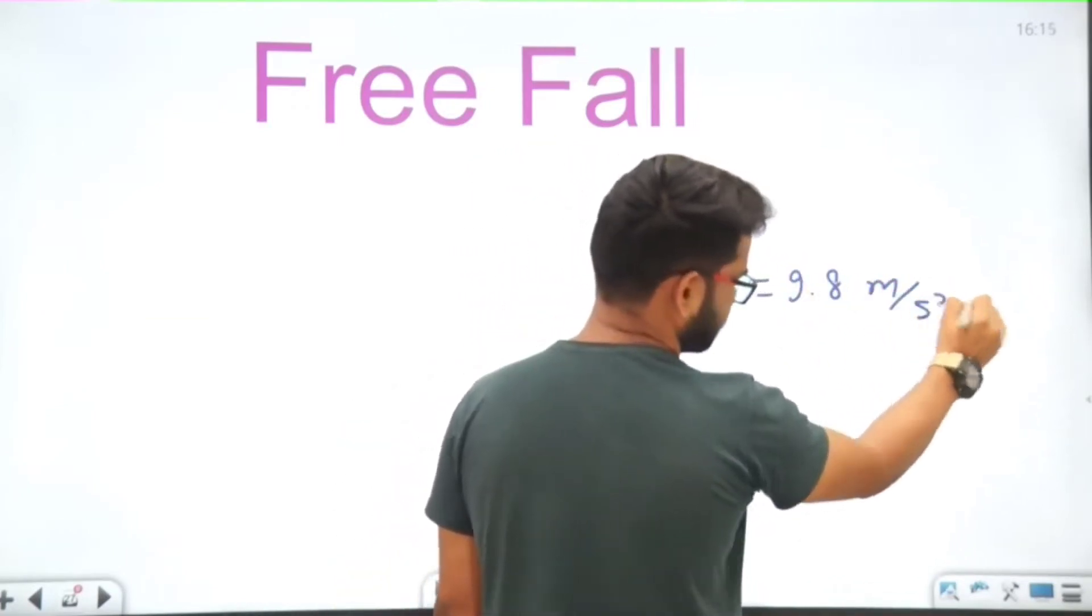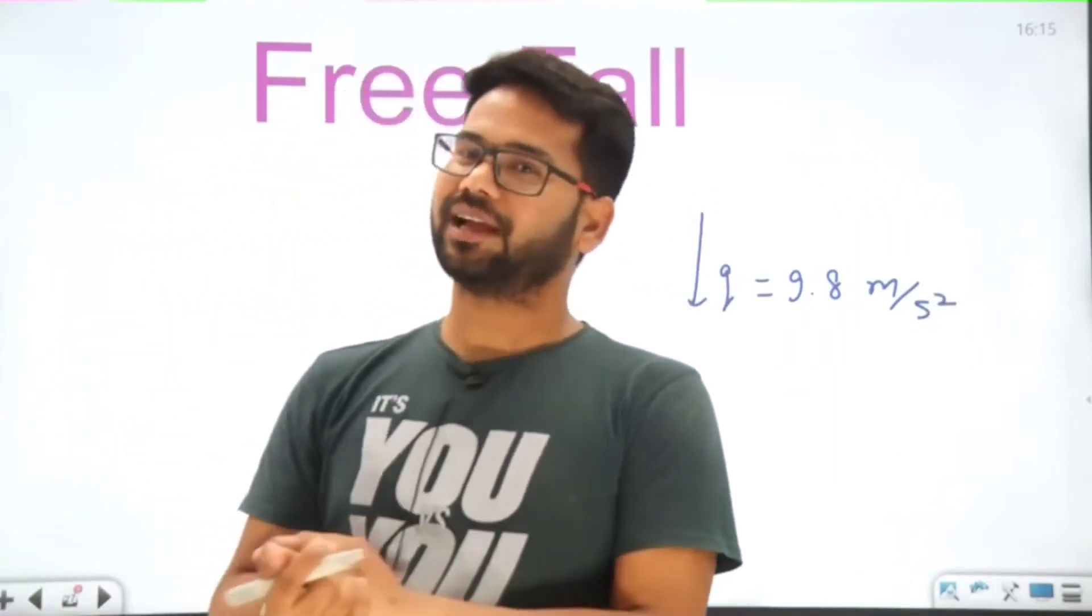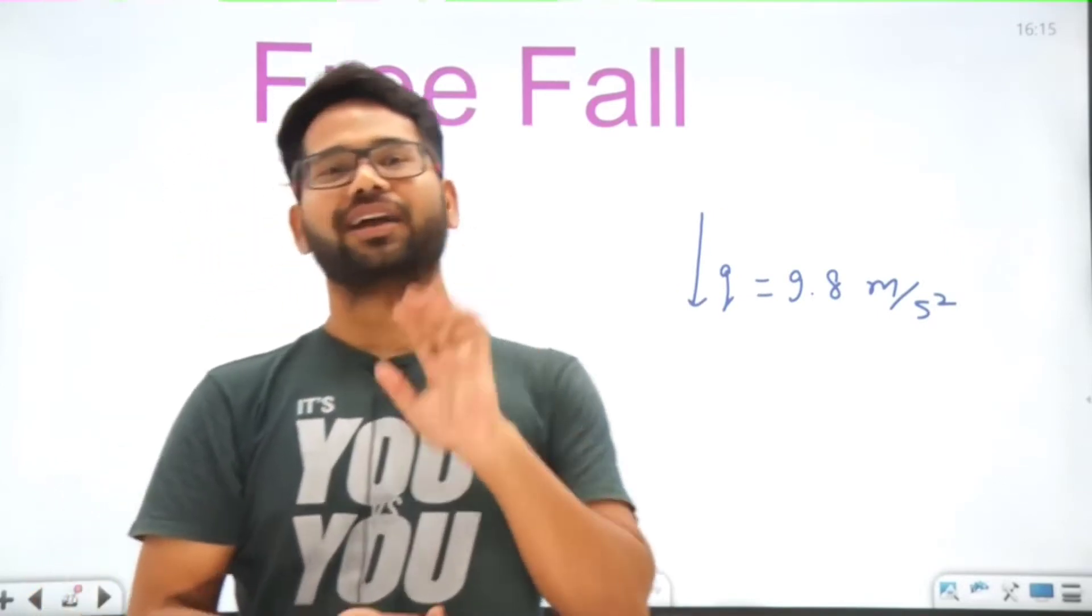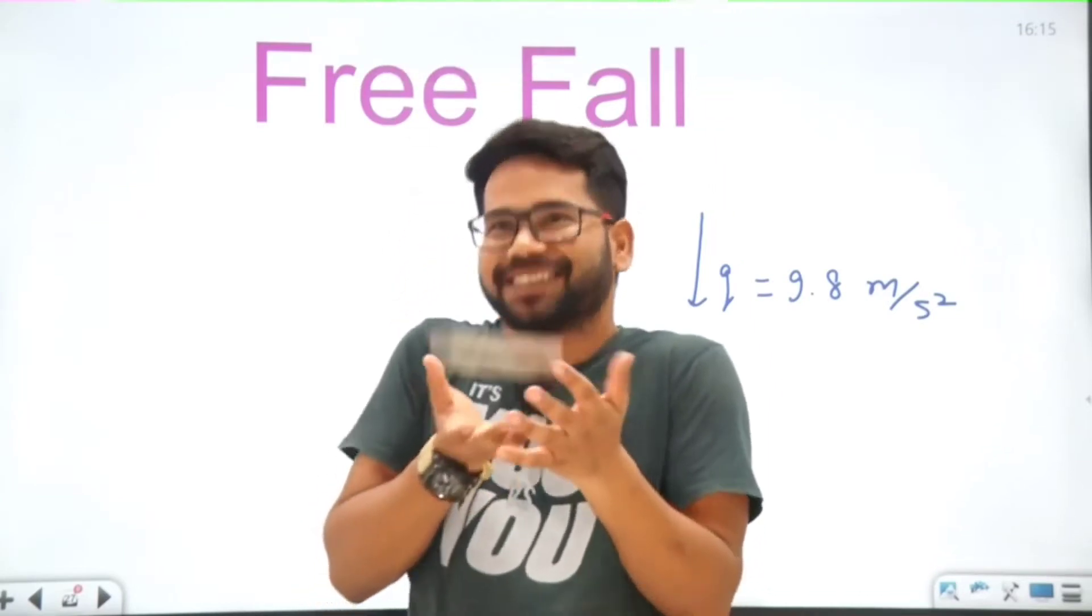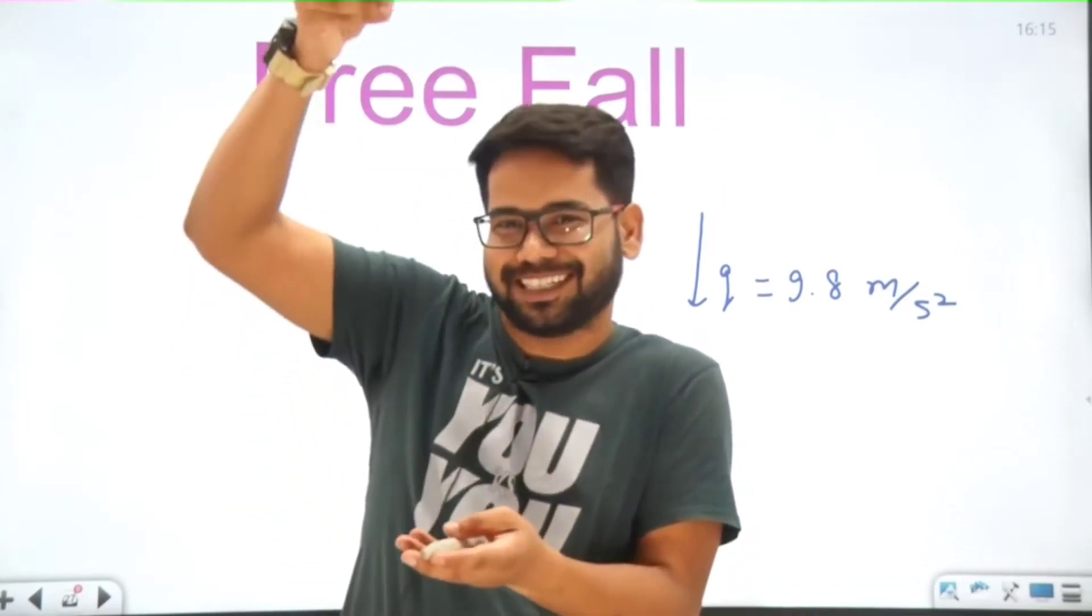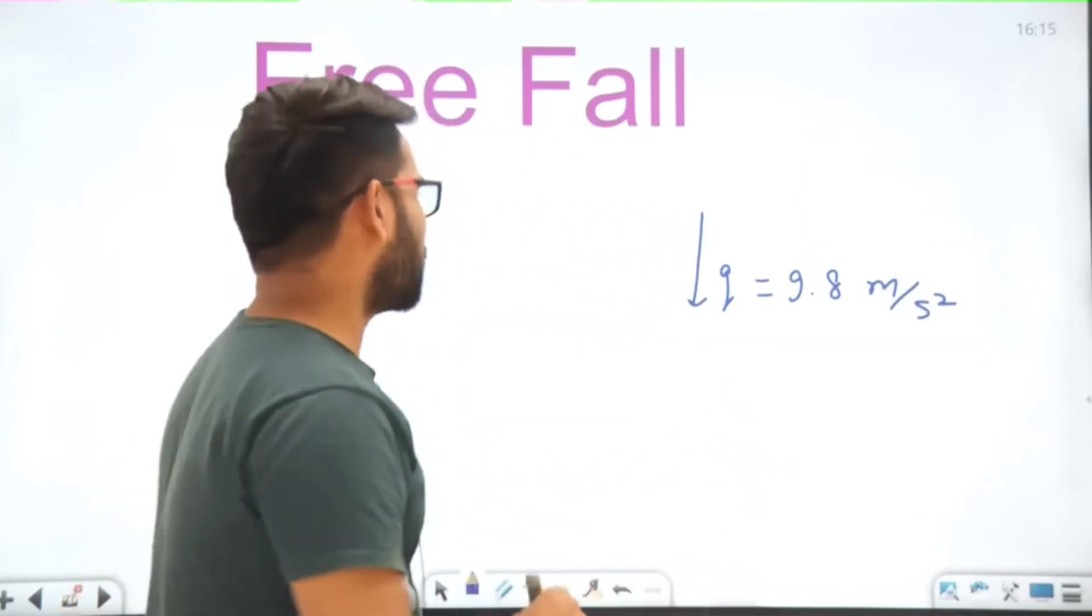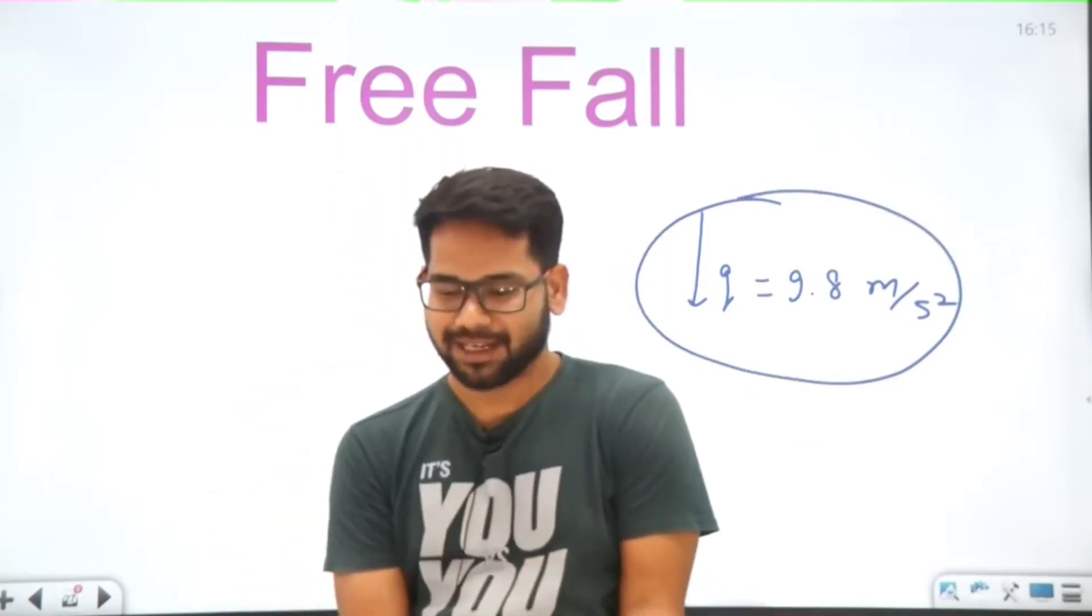If you are going to throw something up, you will see it goes to some height and then its velocity becomes zero, and then it comes back down. Because of this gravitational acceleration, when it's going up, the velocity becomes zero at some height.